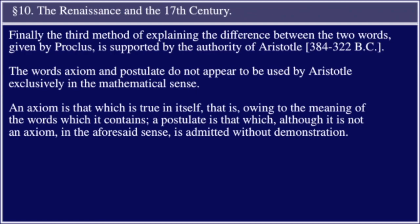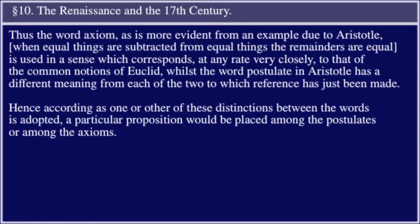The words axiom and postulate do not appear to be used by Aristotle exclusively in the mathematical sense. An axiom is that which is true in itself, that is, owing to the meaning of the words which it contains. A postulate is that which, although it is not an axiom in the aforesaid sense, is admitted without demonstration. Thus the word axiom — as is more evident from an example due to Aristotle: when equal things are subtracted from equal things the remainders are equal —